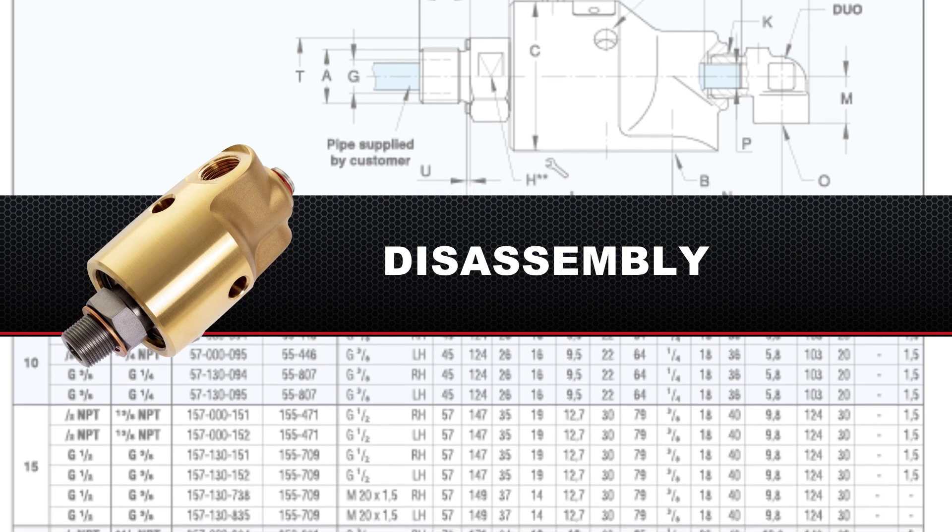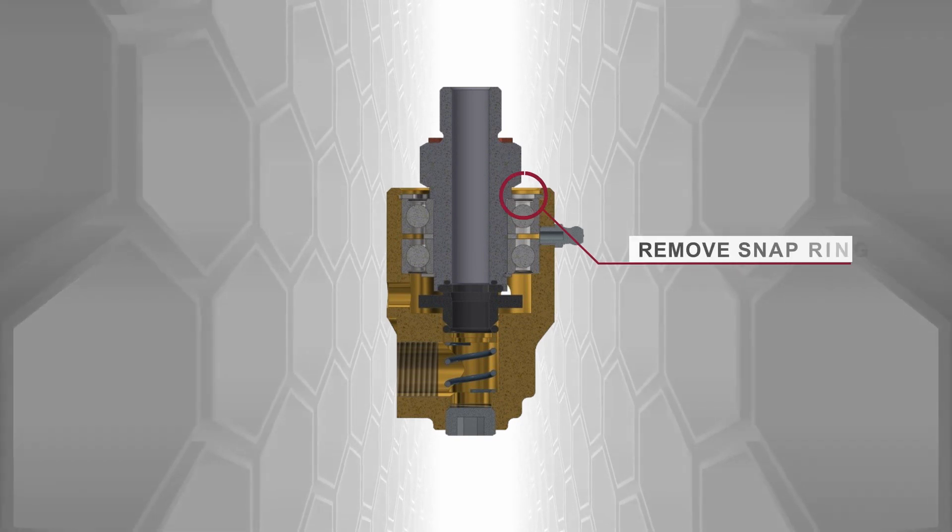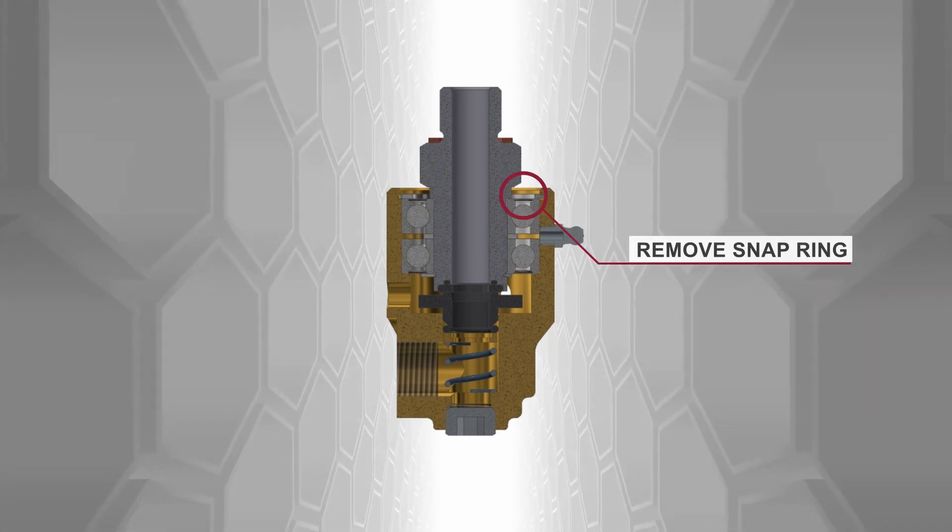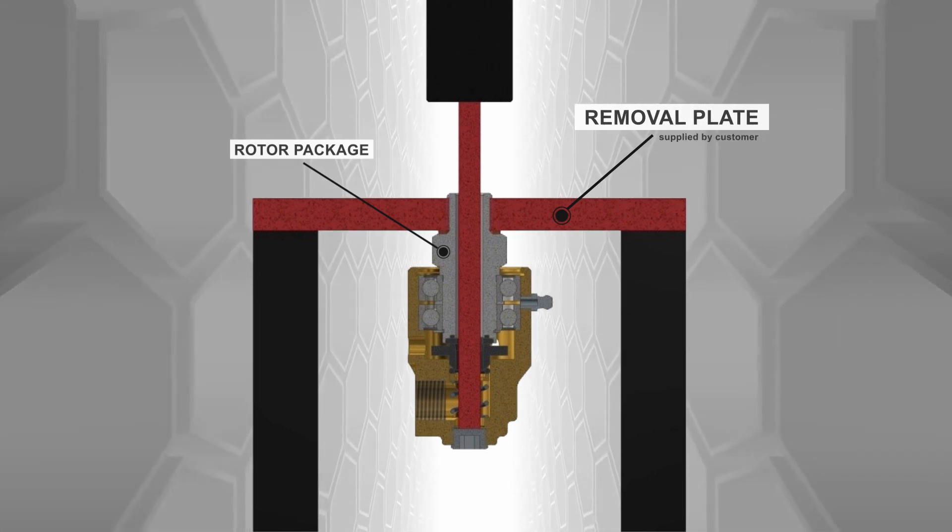Replacing these components begins with disassembling the union. The first step is to remove the union's snap ring. The rotor package is then threaded into a removal plate that is supplied by the customer.